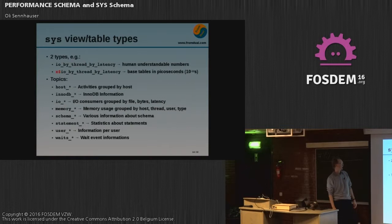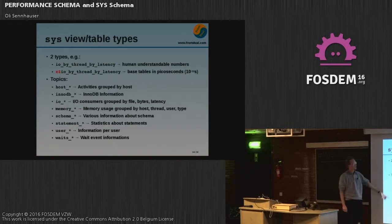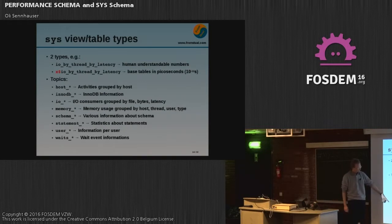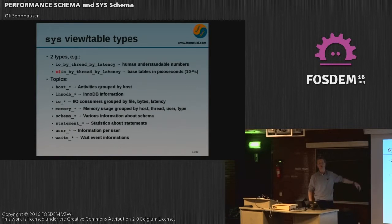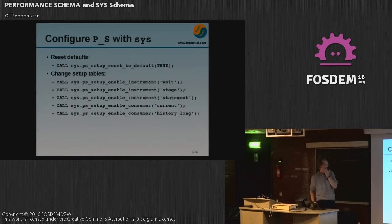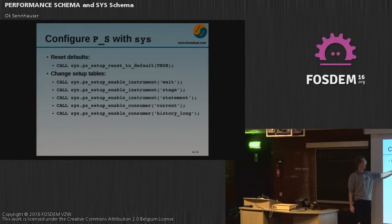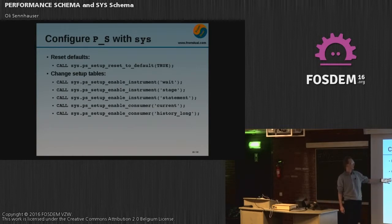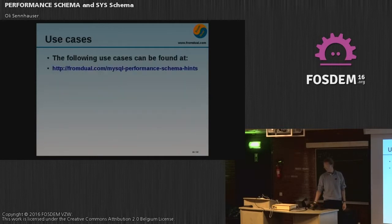For the sys schema tables we have different topics: topics about the host, so everything aggregated by host; insight into InnoDB; insight into the I/O system; memory; information about schema; statements; users; and waits. Everything is already aggregated for you. The performance schema can also be configured by sys schema calls — for example, setting all defaults, resetting misconfiguration back to defaults, or enabling/disabling performance schema functionality using procedures from the sys schema.